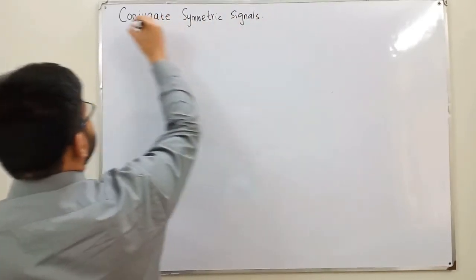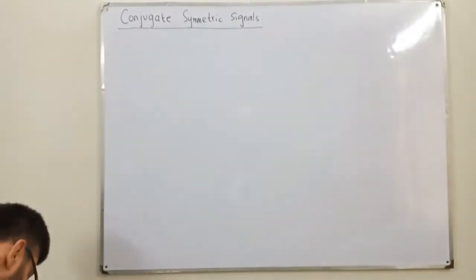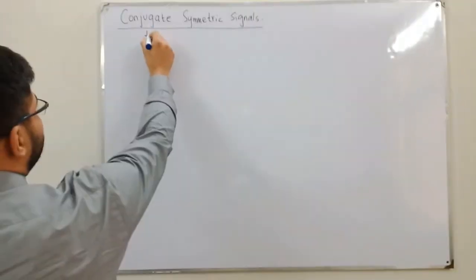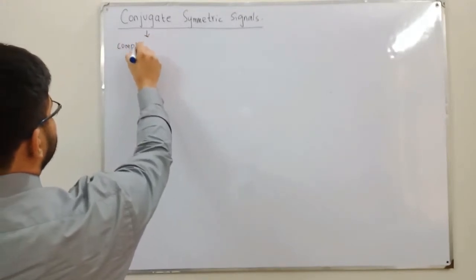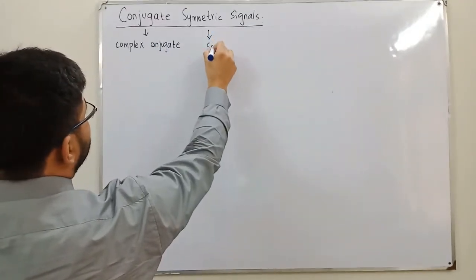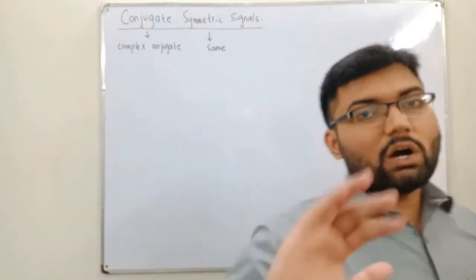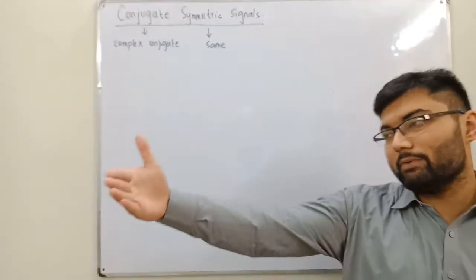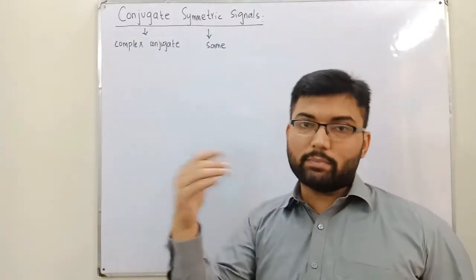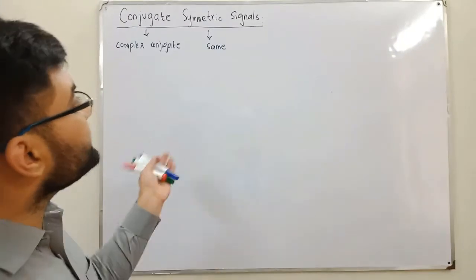Conjugate symmetric signal — what does it mean? The 'conjugate' refers to the complex conjugate, as you've studied in complex numbers. 'Symmetric' refers to symmetry — in signals and systems we deal with amplitude symmetry (y-axis) or time symmetry (x-axis).